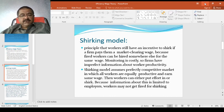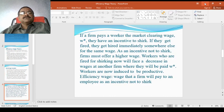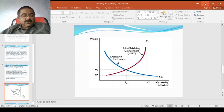So this is the diagram. If a firm pays a worker the market clearing wage W*, they have an incentive to shirk. If they get fired, they get hired immediately somewhere else for the same wage. As an incentive not to shirk, firms must offer a higher wage. This is very important. Workers who are fired for shirking will face a decrease in wages at another firm where they will be paid W* wages. Workers are now induced to be productive.